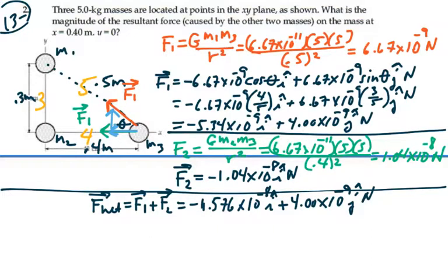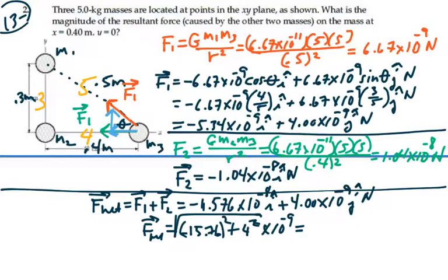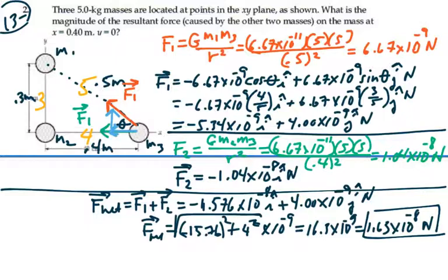We want the magnitude of this force, so we are going to square the components, add them together and take the square root. So the magnitude of this net force is going to equal negative 15.76 squared plus 4 squared, square root everything times 10 to the minus 9, and that's going to be equal to 16.3 times 10 to the minus 9 or 1.63 times 10 to the minus 8 newtons. So that's the magnitude of our resultant force on the third mass: 1.63 times 10 to the minus 8 newtons.